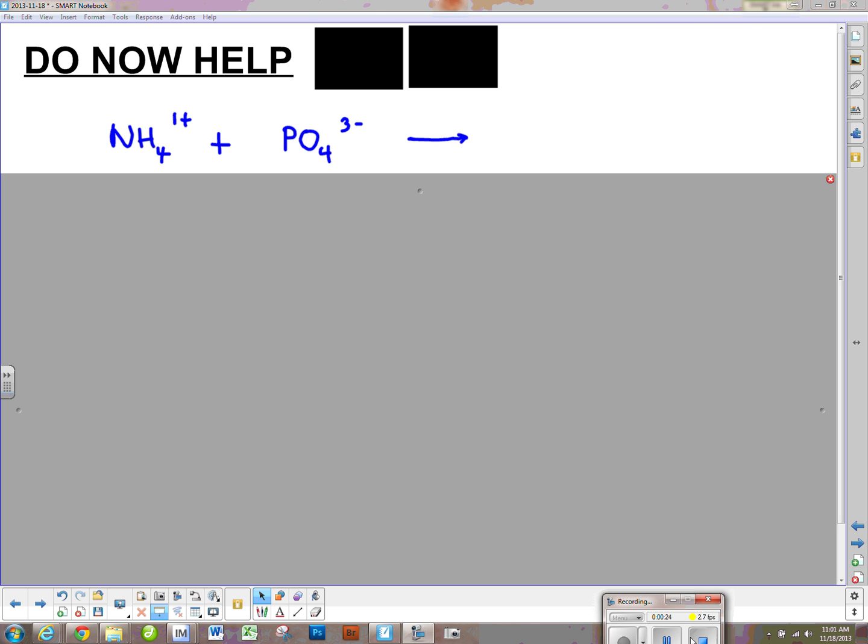First of all, we have to realize that PO4, or the phosphate ion here, is actually a group of atoms that together has a 3- charge, and that ammonium, another polyatomic ion, is a group of atoms that has nitrogen and 4 hydrogens as a group that have an overall charge of 1+.